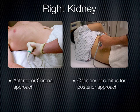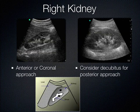How do you actually scan the kidney? Place the probe either in a coronal or anterior location, or turn the probe into a more posterior approach between the ribs posteriorly. It all depends on the patient's body habitus. Sometimes you get better views coronally, sometimes posteriorly.